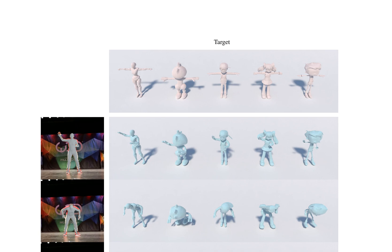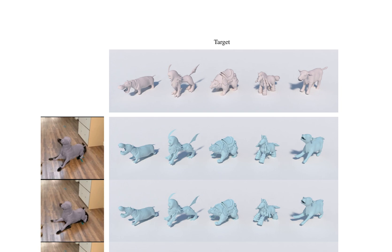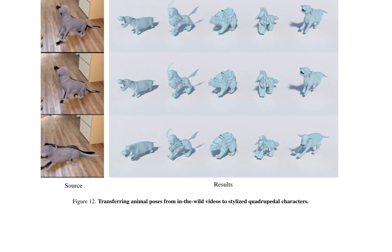The research paper discusses the transfer of poses from in-the-wild videos to stylized characters, focusing on both human and animal subjects. The approach demonstrates the ability to transfer poses effectively for human characters, capturing and adapting poses from real-world videos to fit stylized human characters. The methodology is designed to preserve the natural dynamics of human movement while adapting to the stylized character's context.